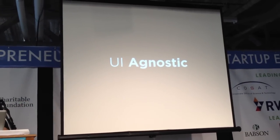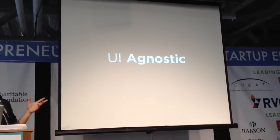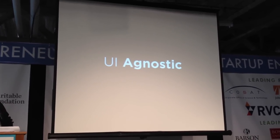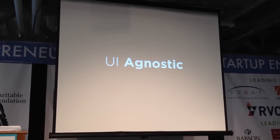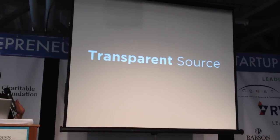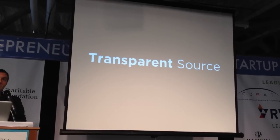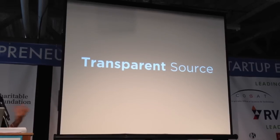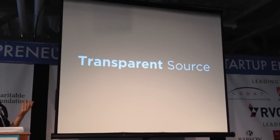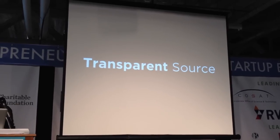Backbone is UI agnostic, which is less controversial now than it was a year and a half ago. Back then, Cappuccino, JavaScript MVC, Dojo, YUI, and SproutCore all expected a comprehensive widget library — everyone asked 'where's your widget library?' We said you should be able to do whatever HTML you want. The source code is transparent and annotated — you shouldn't be afraid of it. And it's only 860 lines of code, so rarely has so much fuss been made about so little code.